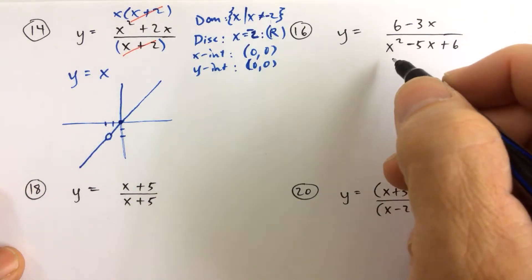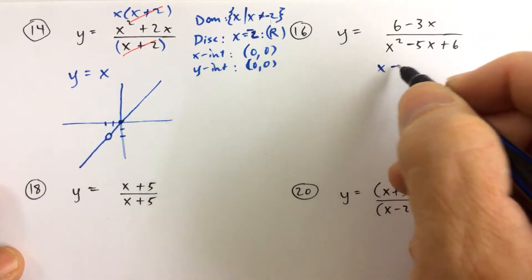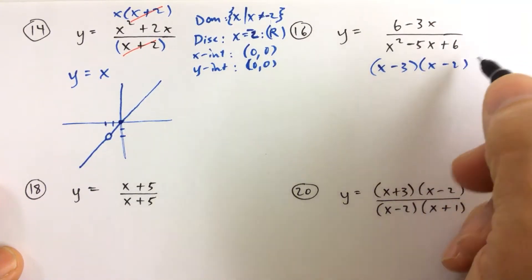For number 16, again, we want to find discontinuities, and that's only going to be found in our denominator. So we have to factor our denominator.